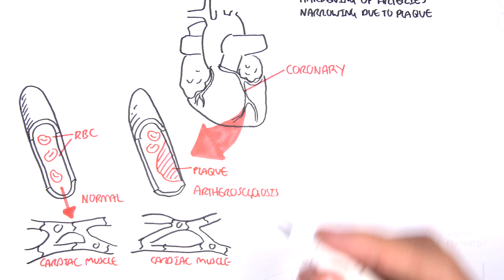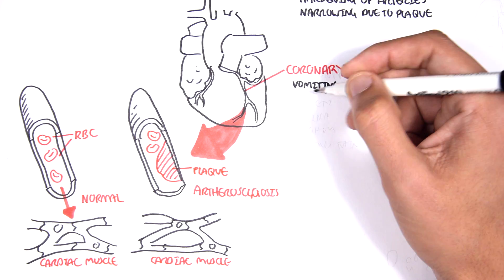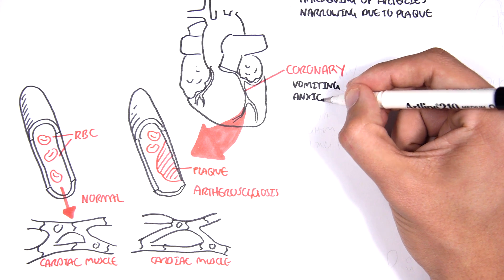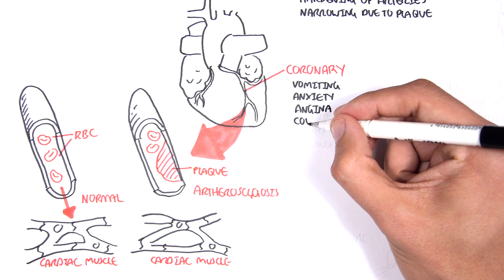Symptoms of atherosclerosis in the coronary arteries include vomiting, anxiety, angina, which is pain in the chest area, coughing and feeling faint.